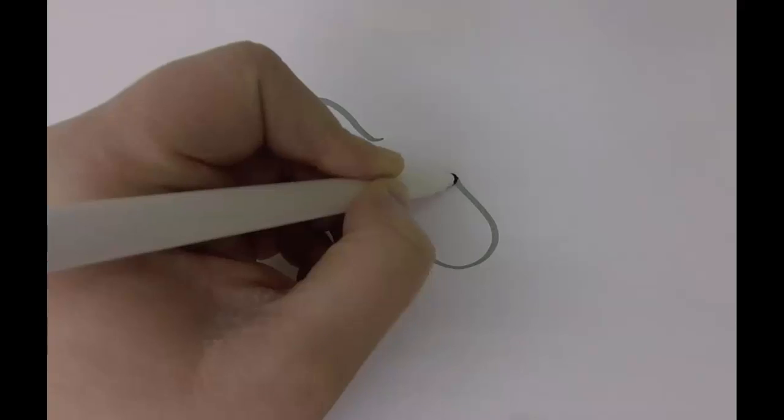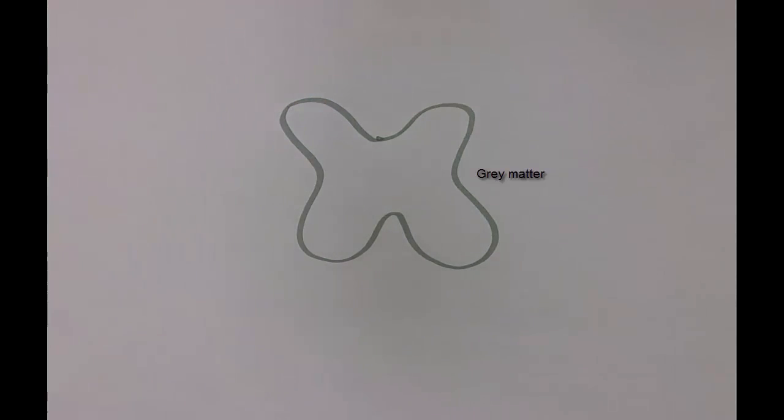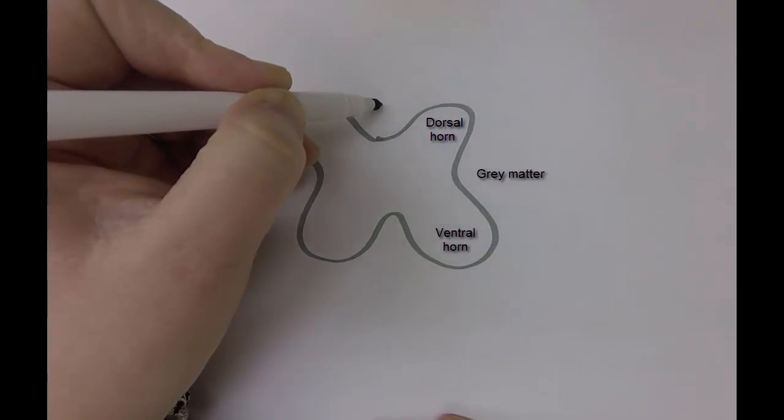I'm going to start by drawing this butterfly or H-shaped region here, and this is going to represent grey matter. Grey matter can be divided into dorsal horns and ventral horns.